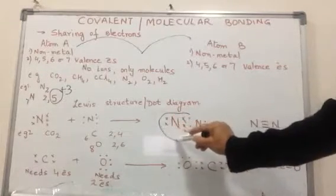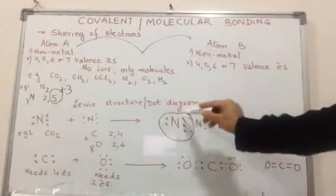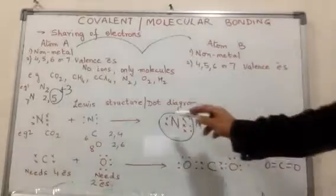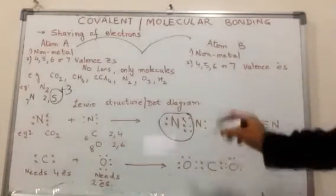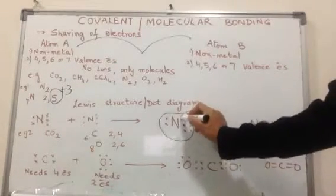Three pairs are shared pairs and two are unshared pairs. Similarly, for the second nitrogen, we draw a circle and include the shared pair of electrons.